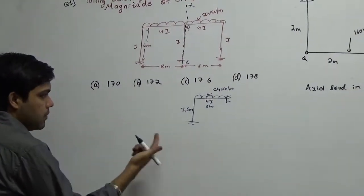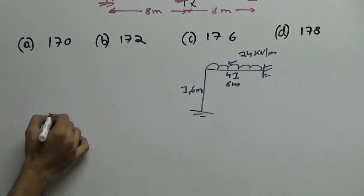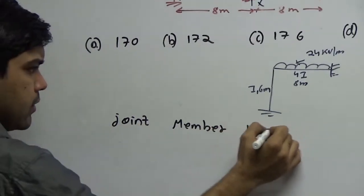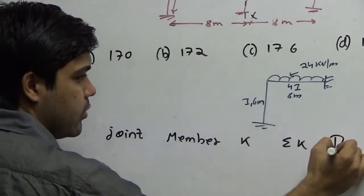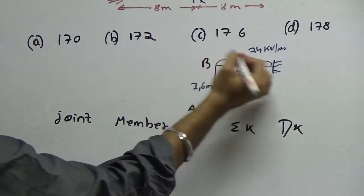Now if this is a problem, the first step of moment distribution is the distribution factors. So joint, member, stiffness, sum of stiffness and distribution factor. I have this joint as A, B and let this be P.